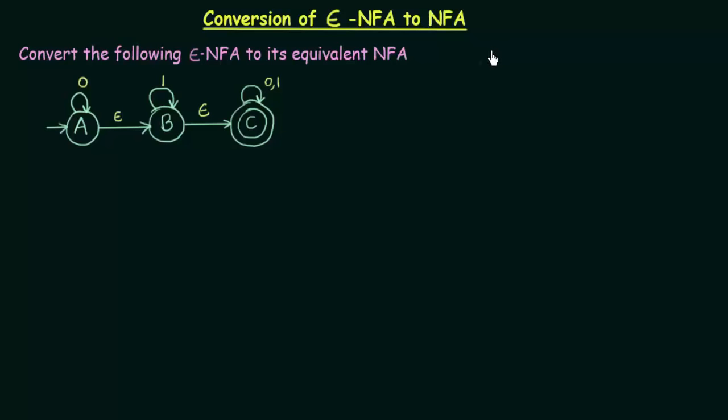In the last lecture we studied about Epsilon NFA, and in this lecture we will be studying how to convert Epsilon NFA to its equivalent NFA. Here we have a question given: convert the following Epsilon NFA to its equivalent NFA. We know it is an Epsilon NFA because Epsilon symbols are also used in this NFA, and our task is to convert it to its equivalent NFA.